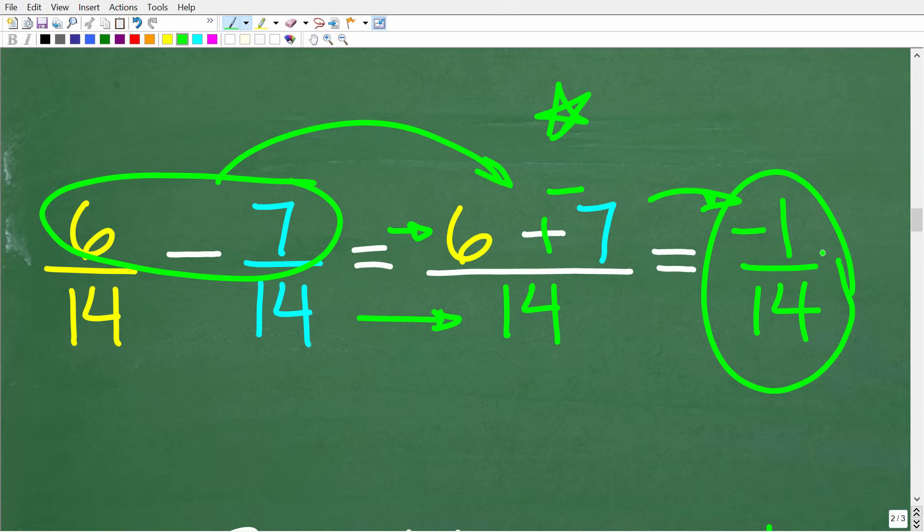Okay, so when you are adding and subtracting fractions and you have a common denominator, it's very easy to do the math. All we have to do is the respective operation in the numerator and keep that denominator. So 6 fourteenths minus 7 over 14 is going to be equal to 6 minus 7.